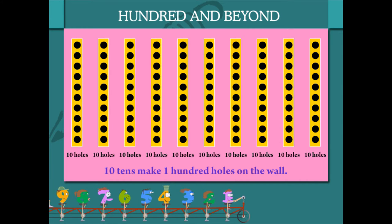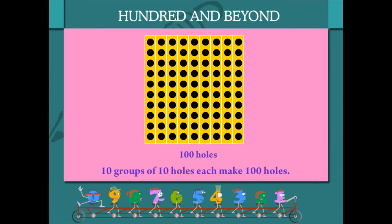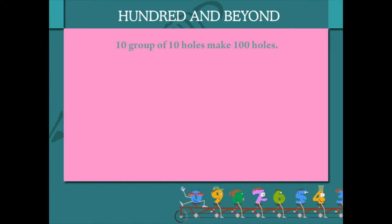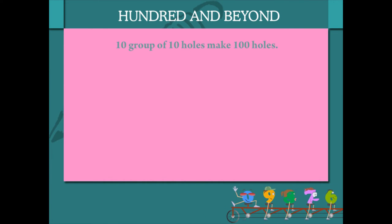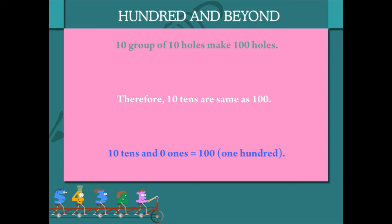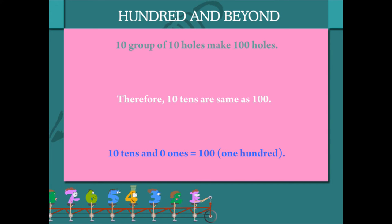10 groups of 10 holes each makes 10 tens or 100 holes. Just like 10 groups of 10 holes make 100 holes, similarly 10 tens of anything are the same as 100.